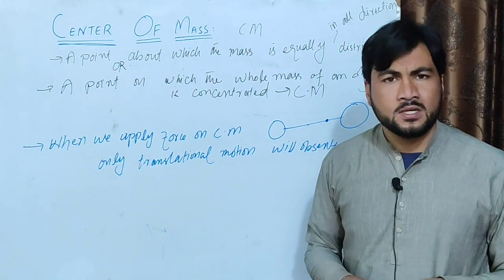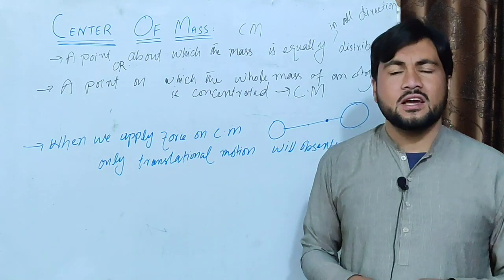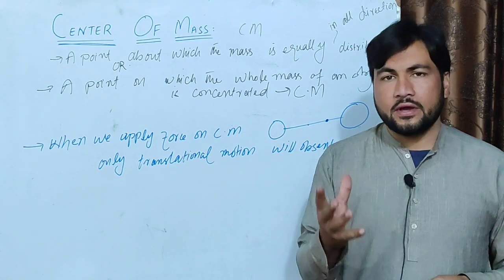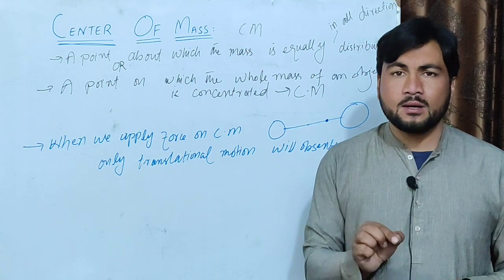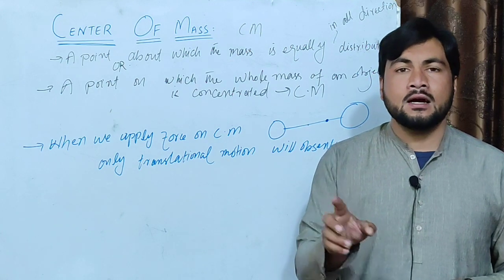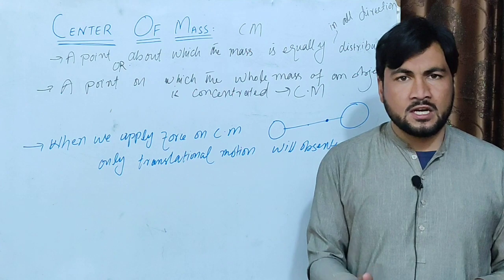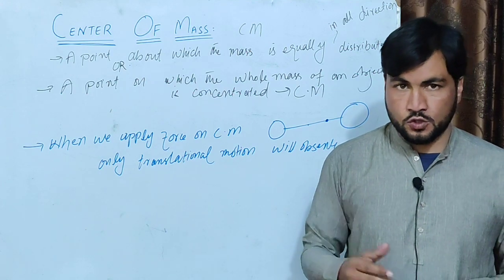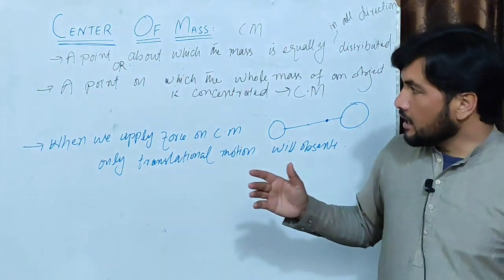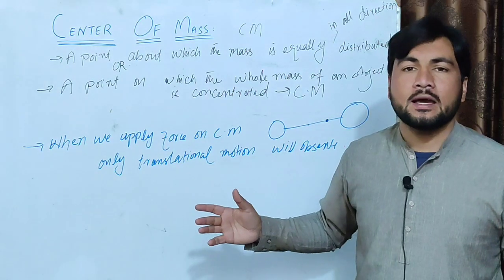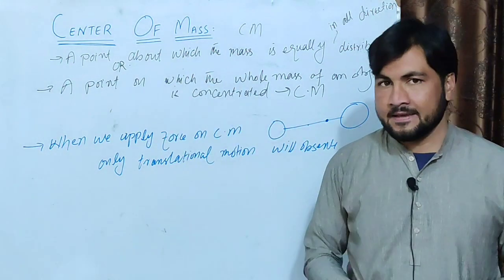With the extended body in a free body diagram, you can represent the extended body as a single point, and draw arrows in a specific direction to show the forces applied. The single point is the appropriate point — the center of mass.